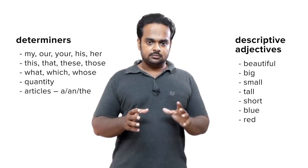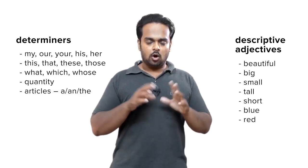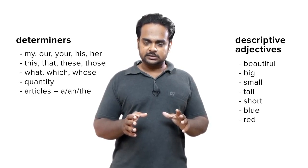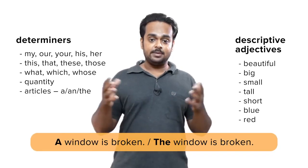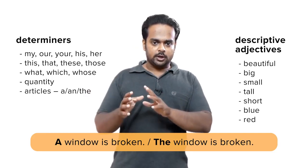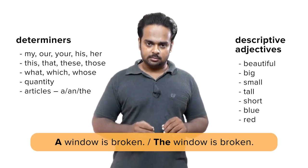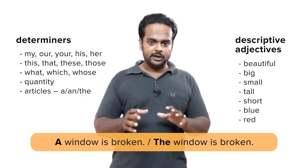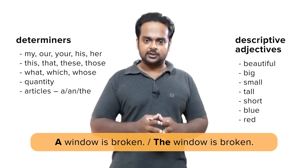And finally, articles — that is the words a, an, and the — are also considered adjectives. Because if I said 'a window is broken,' it could be any window. But if I said 'the window is broken,' we both know which window I'm talking about. So articles give us information about nouns and so they're also adjectives.